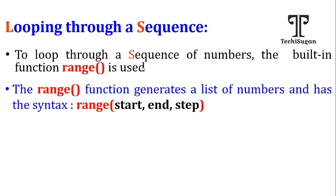If you are aware of other programming languages, you might know the for loop syntax there: for initialization, condition, followed by increment. The same thing is represented here — initialization is your start, the condition part is for termination which here is the end, and the increment corresponds to the step value. Now, whether these three parameters are mandatory or optional — among these three, the end parameter is the mandatory one.